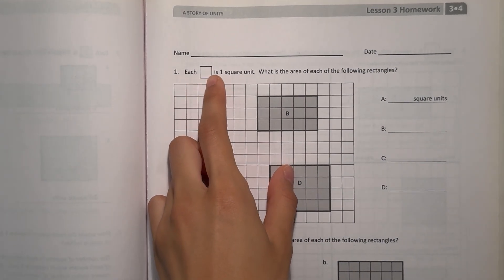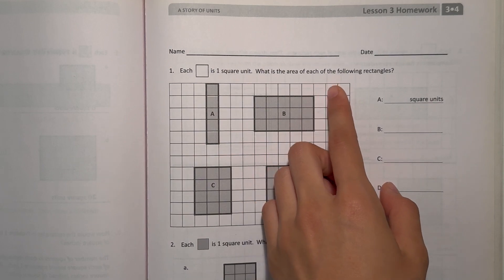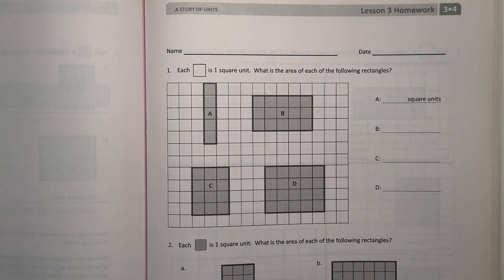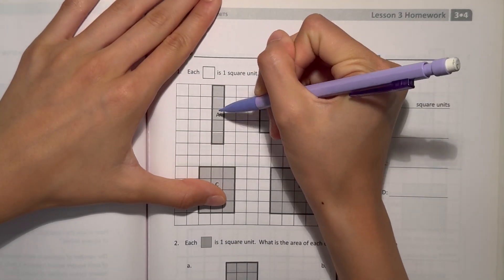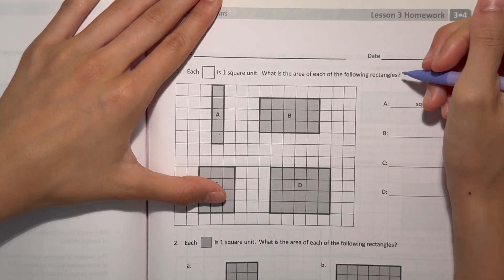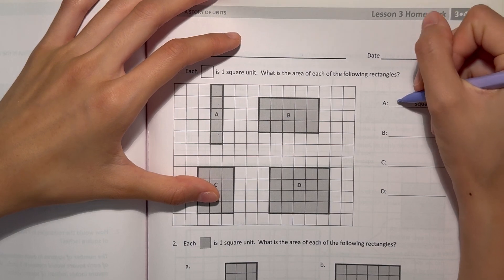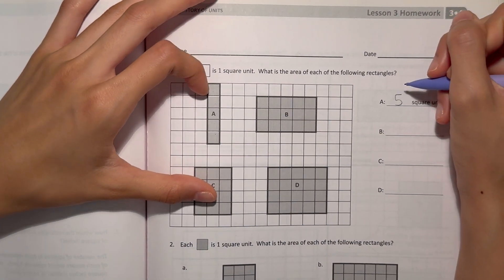Number 1, each square is 1 square unit. What's the area of each of the following rectangles? Alright, so A, we have 1, 2, 3, 4, 5 squares. So that means it's 5 square units. That's the area.